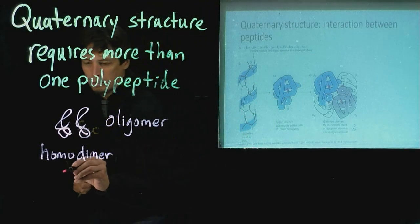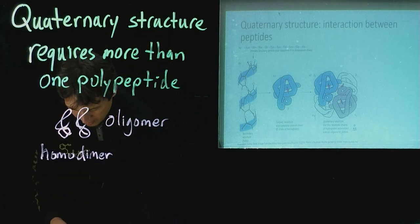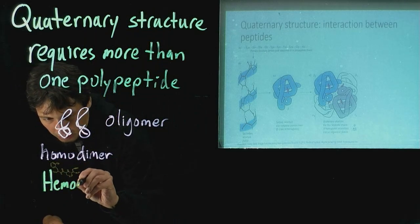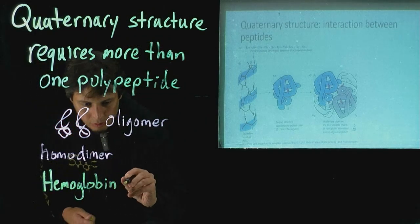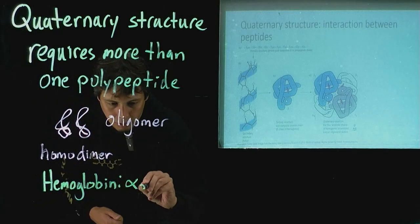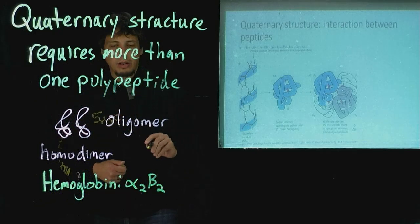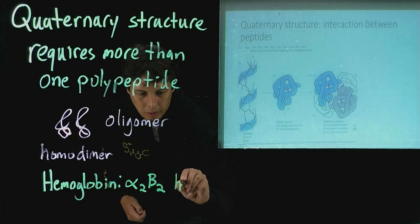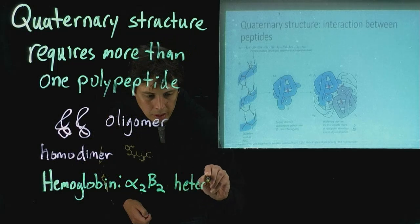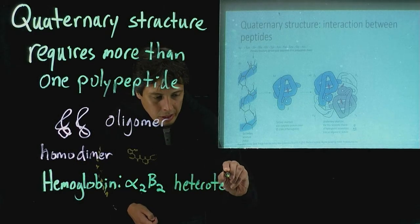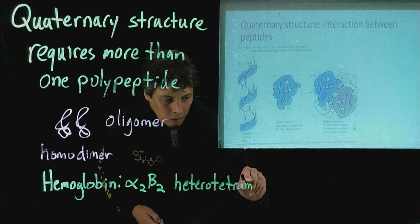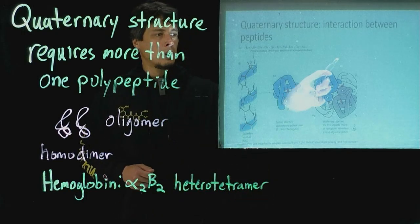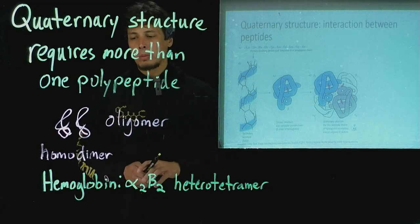For hemoglobin, we call that an alpha 2 beta 2 heterotetramer, because not all of the polypeptide sequences are identical and there are four subunits. Each of these polypeptide chains we call a subunit.